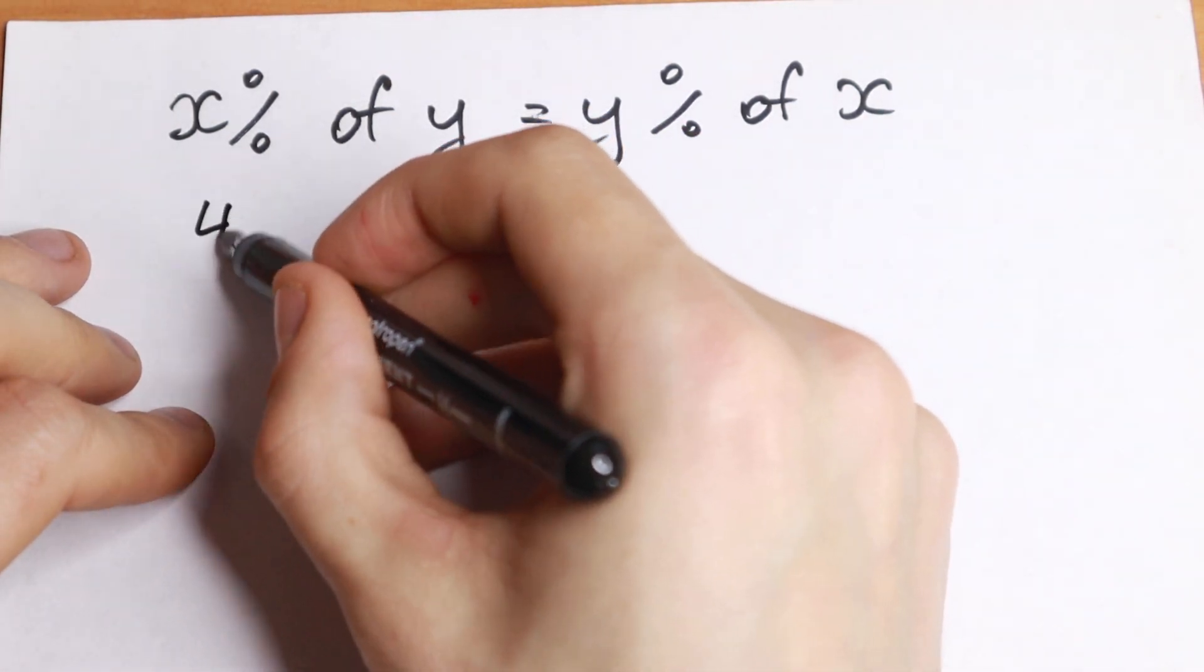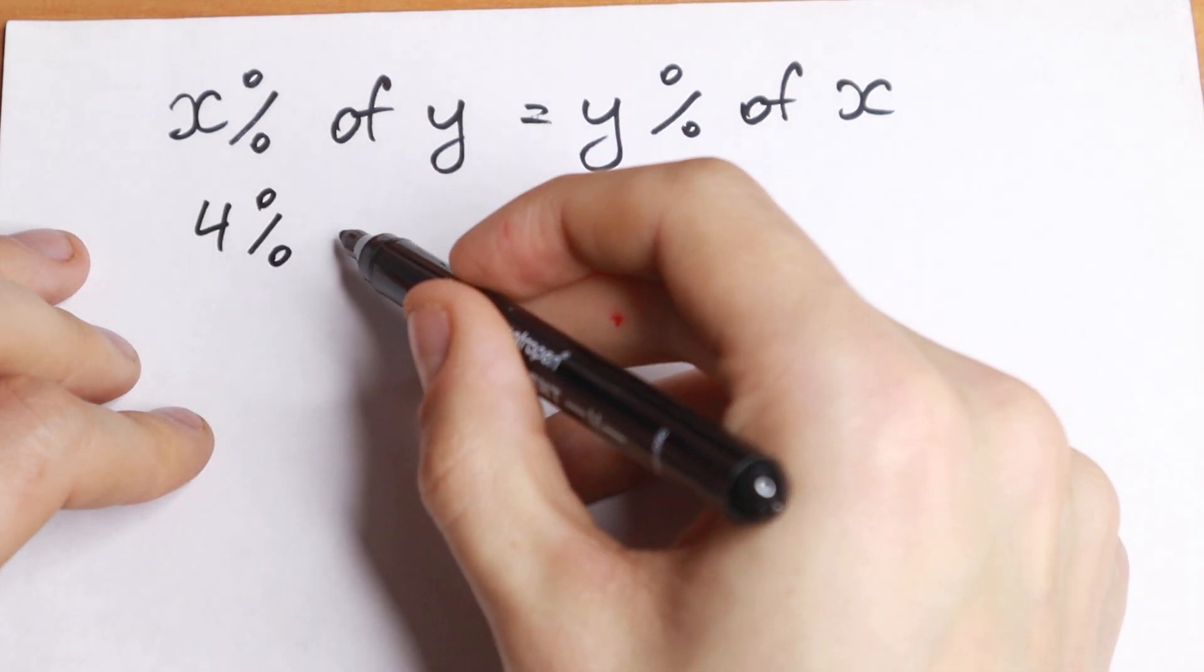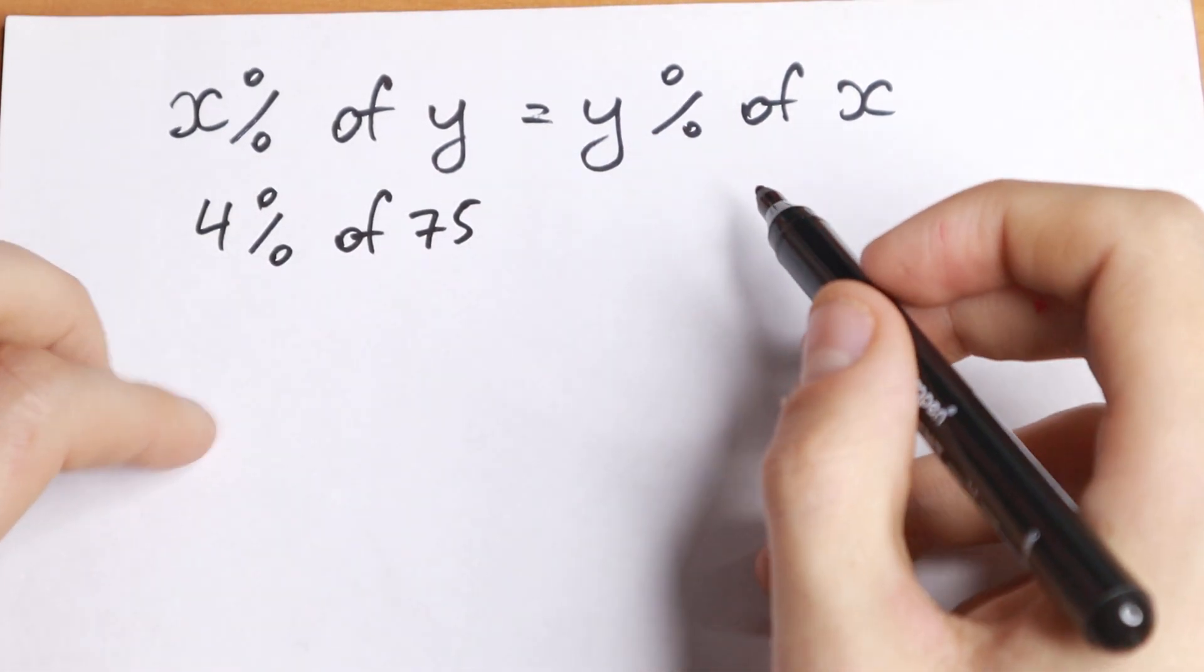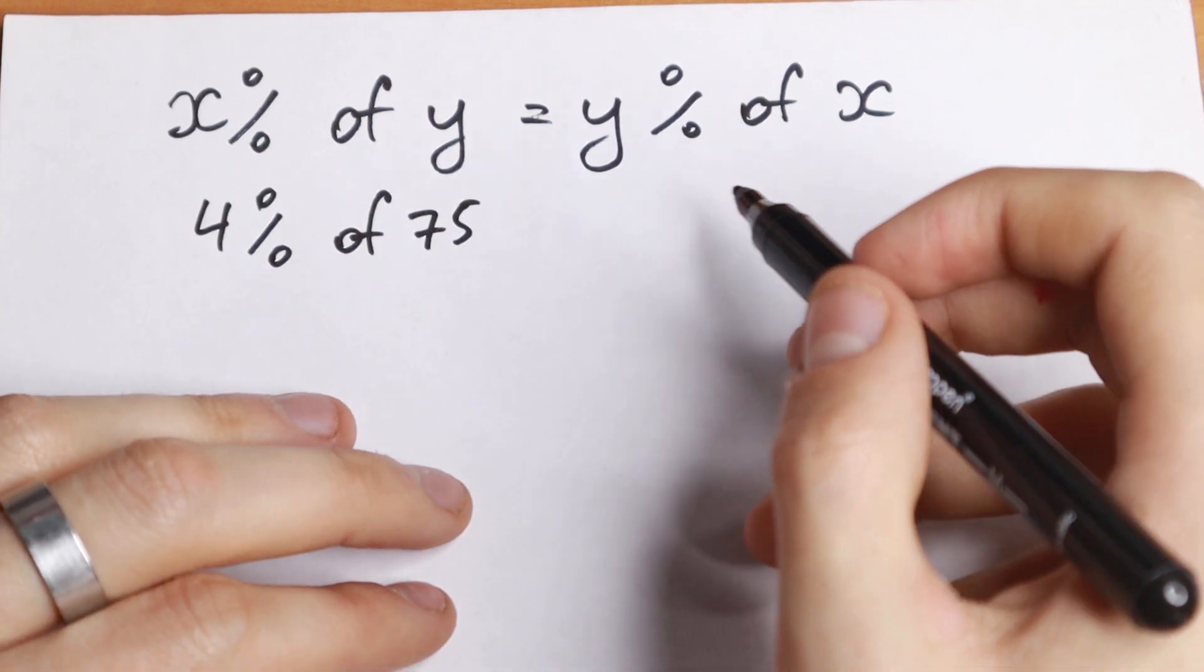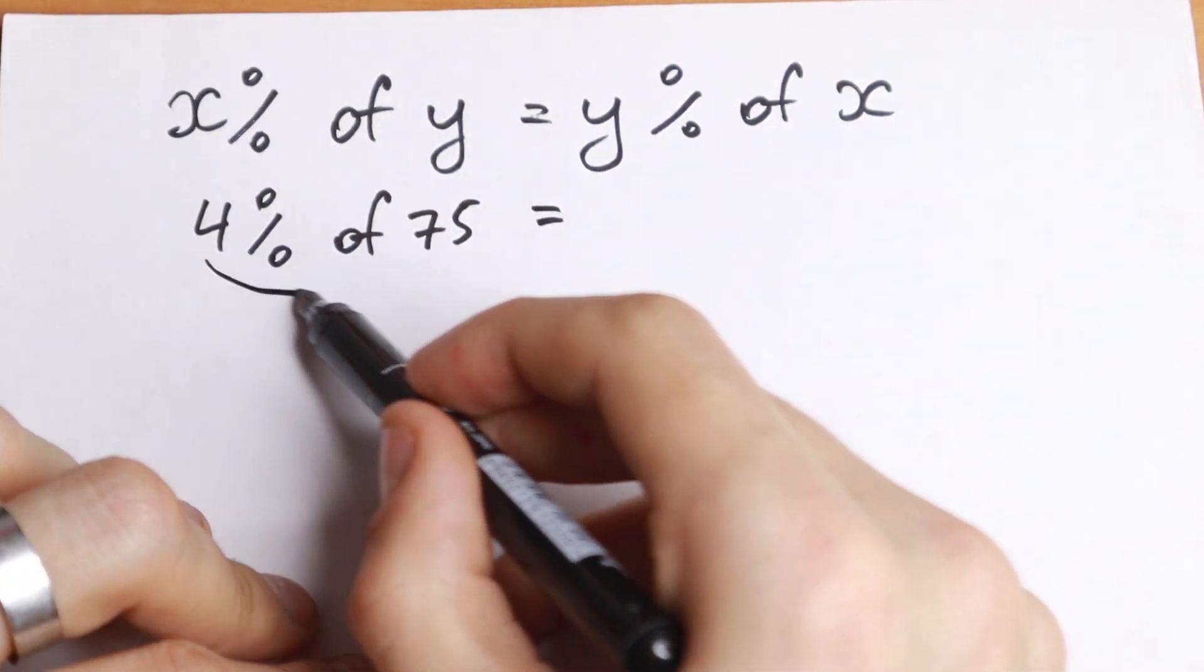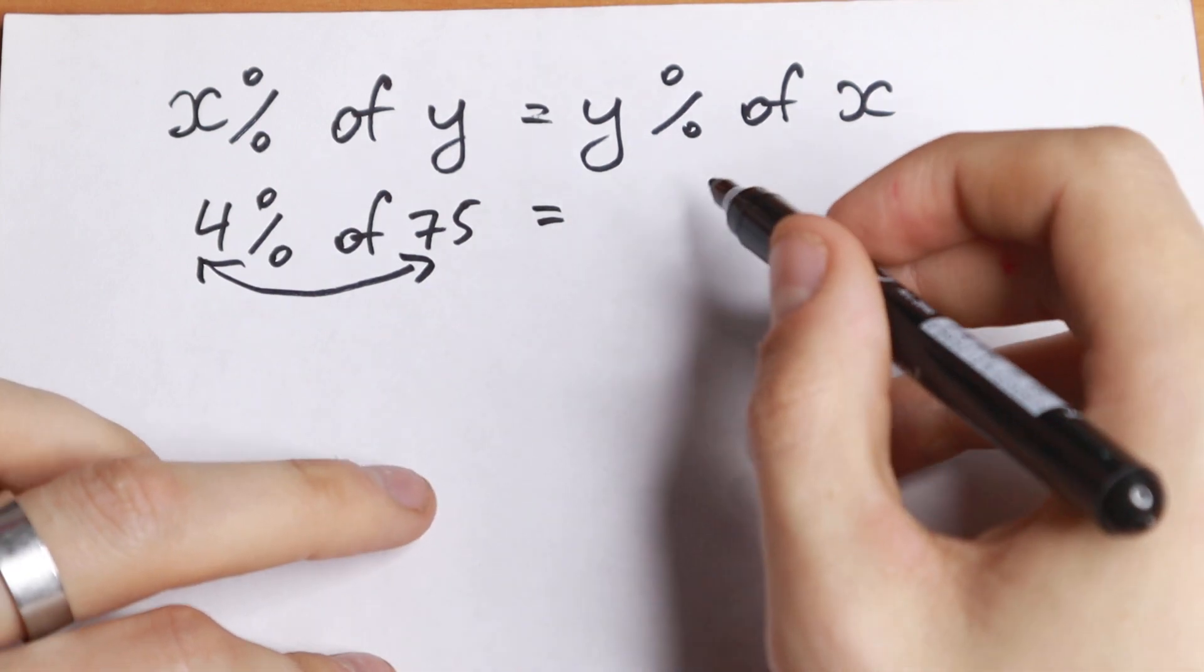Take a look if we have 4 percent, for example, of 75. If you need to know this answer, you need just to swap these two numbers, 4 and 75. And as a result,